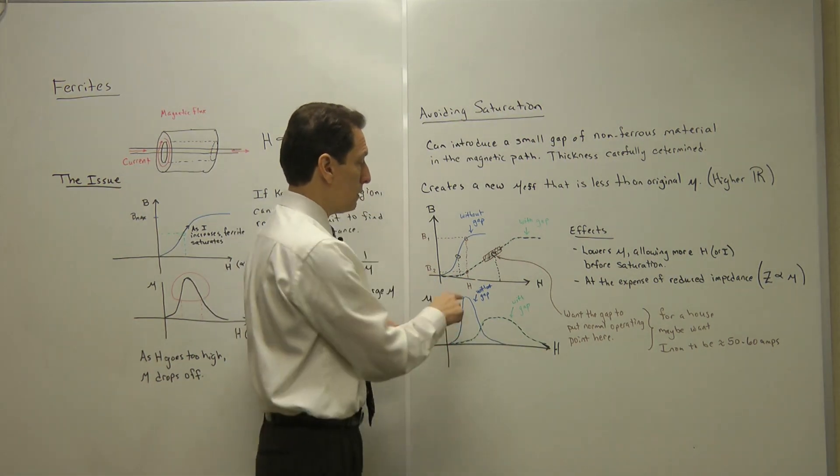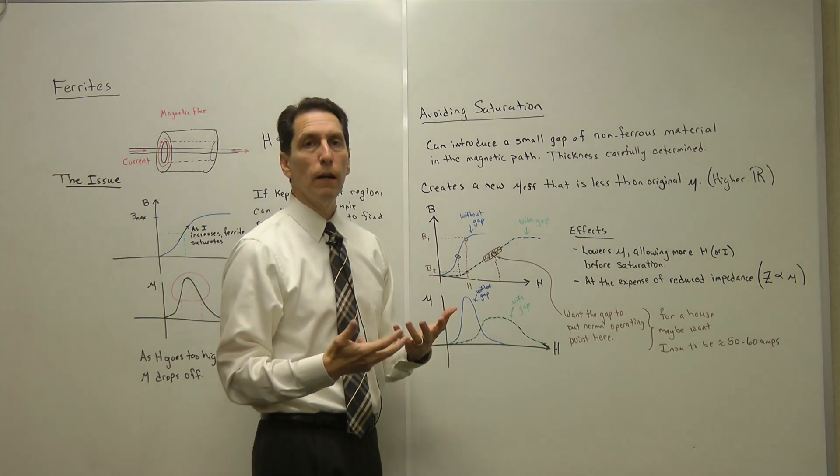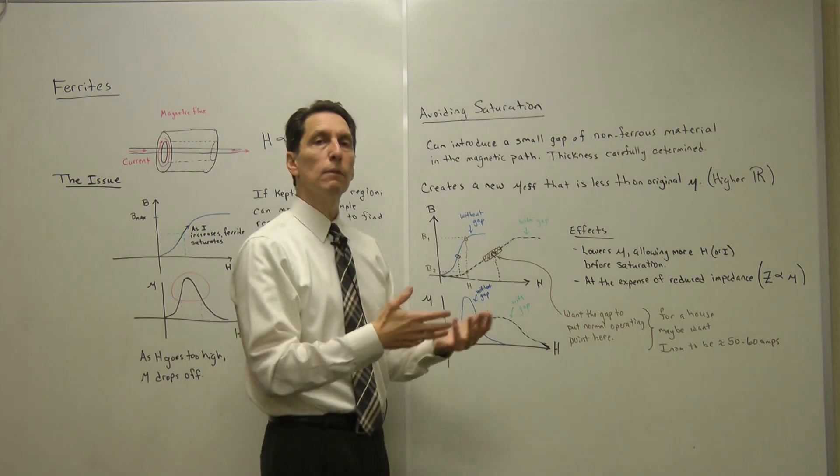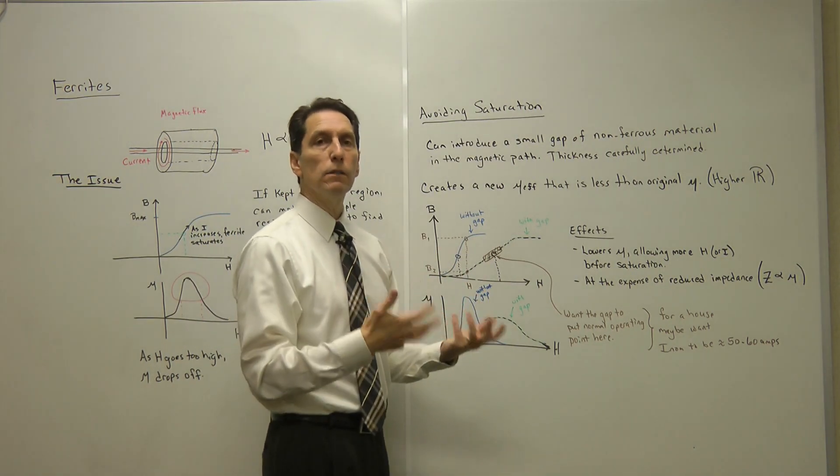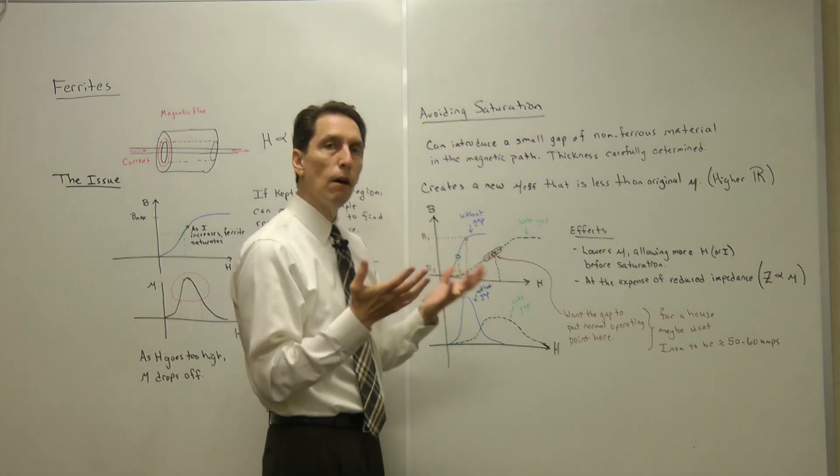Now, the expense of it is you notice that the peak permeability has dropped, which means the performance of the ferrite is not quite as good as it was. It's a trade. You're giving up being able to take in more current at the expense of the permeability, the effectiveness of the ferrite. You're trading off the two.